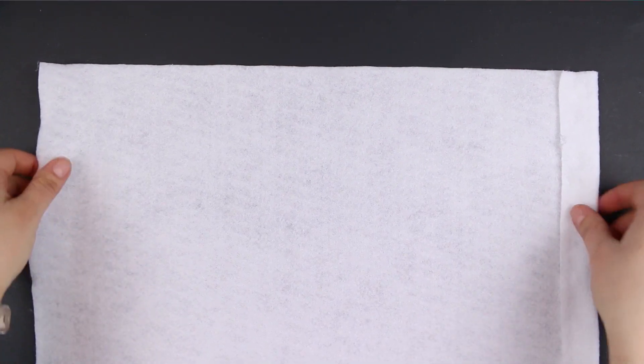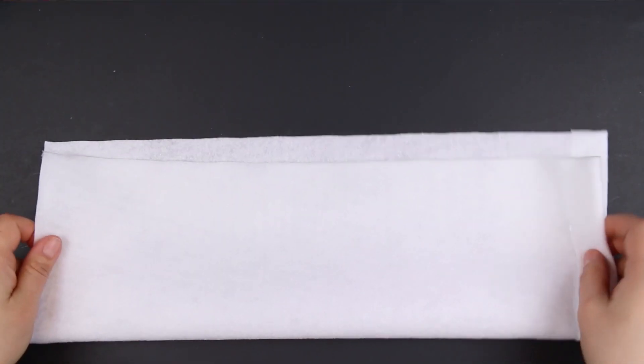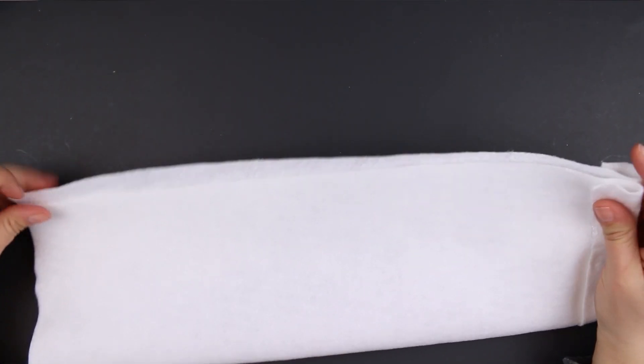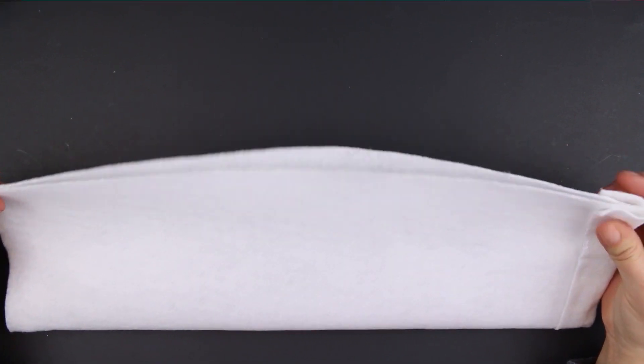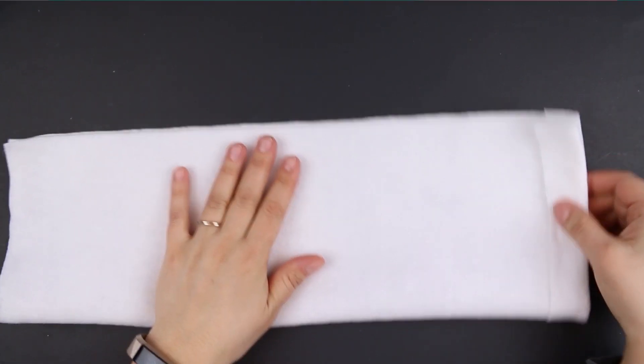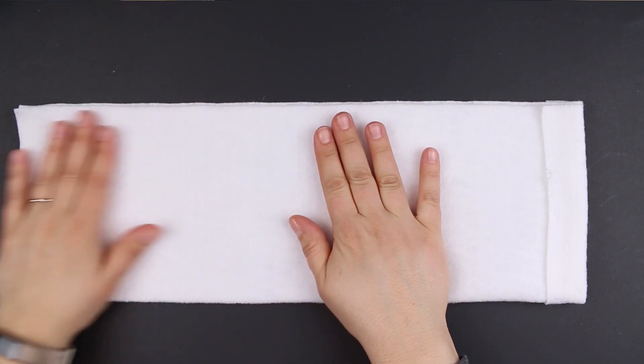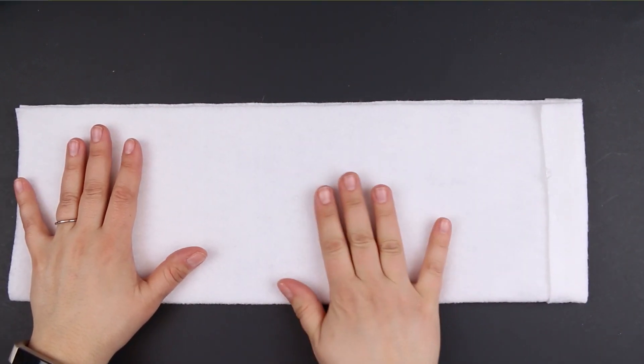Once the hot glue is dried, you want to fold the piece of felt in half the long way and make sure that the right sides are facing together. So what will be the front of your banner is on the inside of the fold.